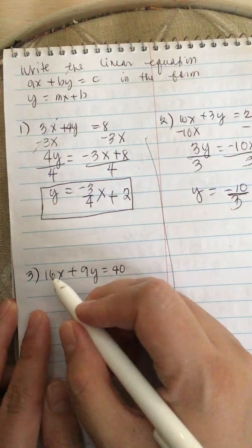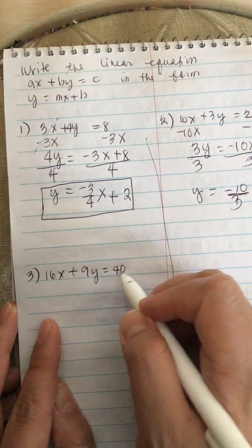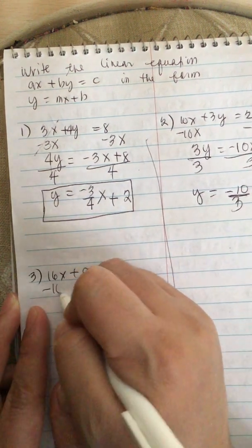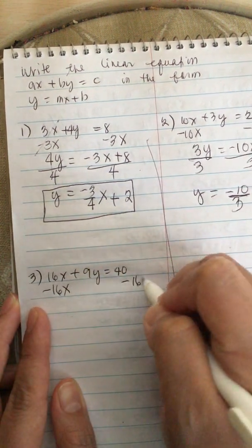Next one, we have 16X plus 9Y equals 40. So we solve for Y. Minus 16X minus 16X.